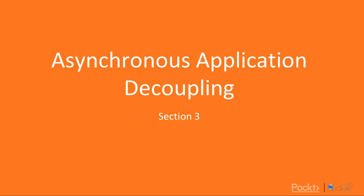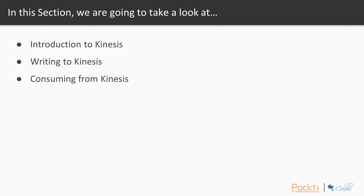Welcome back to this section on asynchronous application decoupling. In this section, we'll start with an introduction to Kinesis, then write an application that places events on a Kinesis stream, and finally use a Lambda function to consume and process Kinesis events.